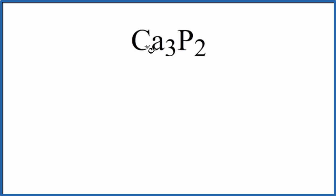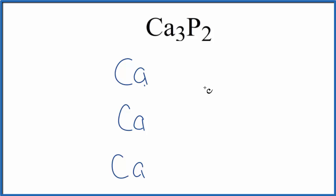Electrons are going to be transferred from the metal to the non-metal. So let's write three calcium atoms and then the two phosphorus atoms. Calcium that's in group two on the periodic table, it's going to have two valence electrons. So each calcium has two valence electrons.